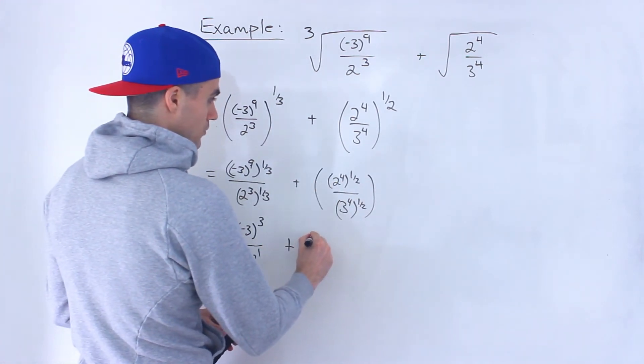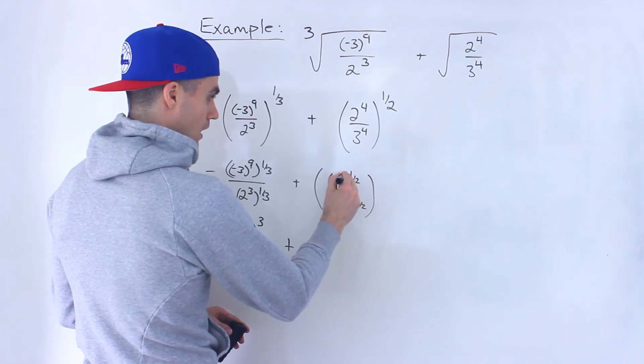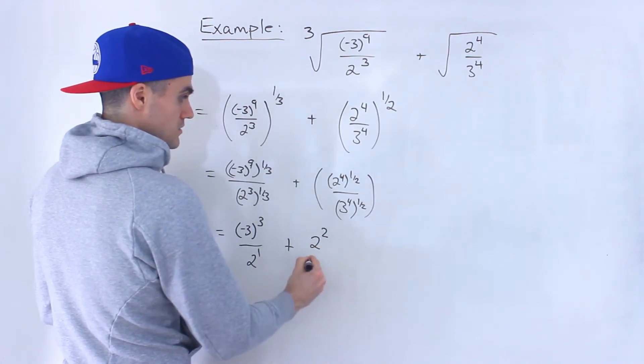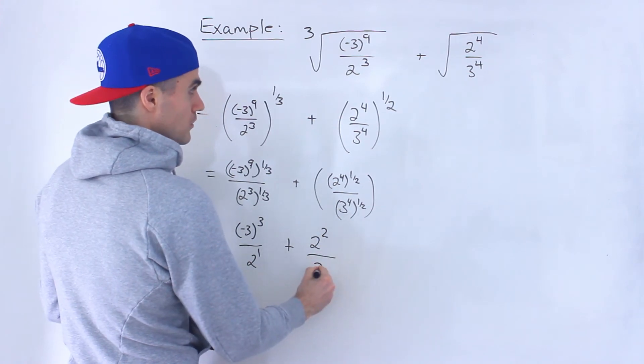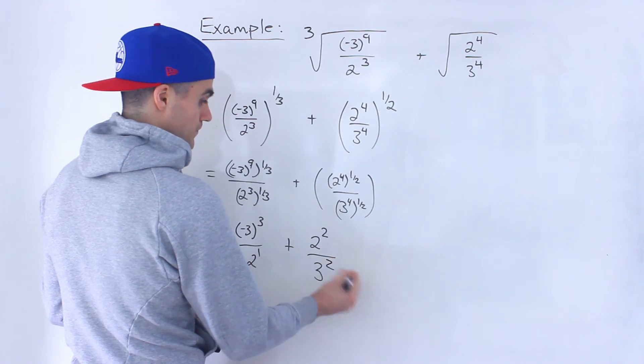This here, we would end up with 2 to the power of 2, right? 4 times 1 over 2 is 2. And then over here, we would end up with 3 to the power of 2 as well.